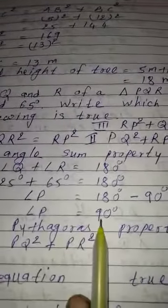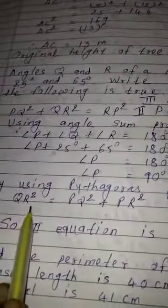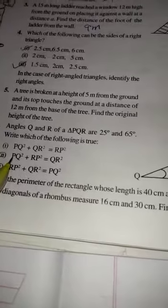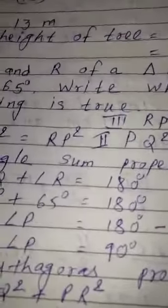Therefore, angle P is equal to 180 minus 90 degree. So, angle P is equal to 90 degree. Now, use Pythagoras theorem. In Pythagoras theorem, QR square means hypotenuse is equal to PQ square plus PR square. Now, three equations are given. Out of three equations, the second number is absolutely right. So, second equation is true.